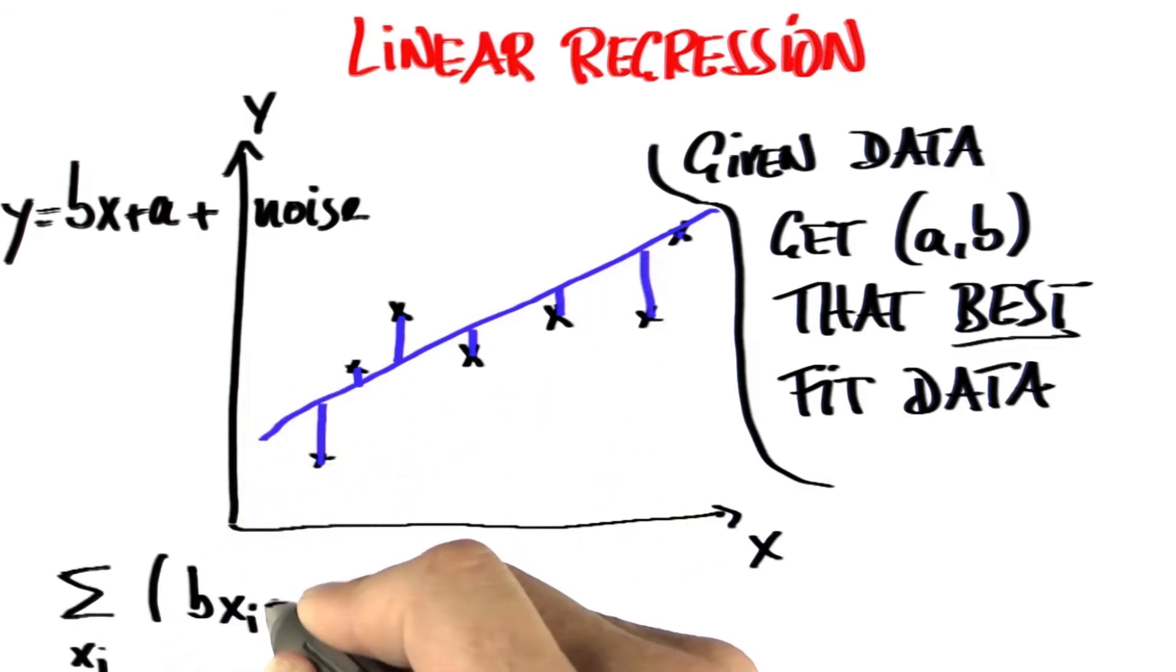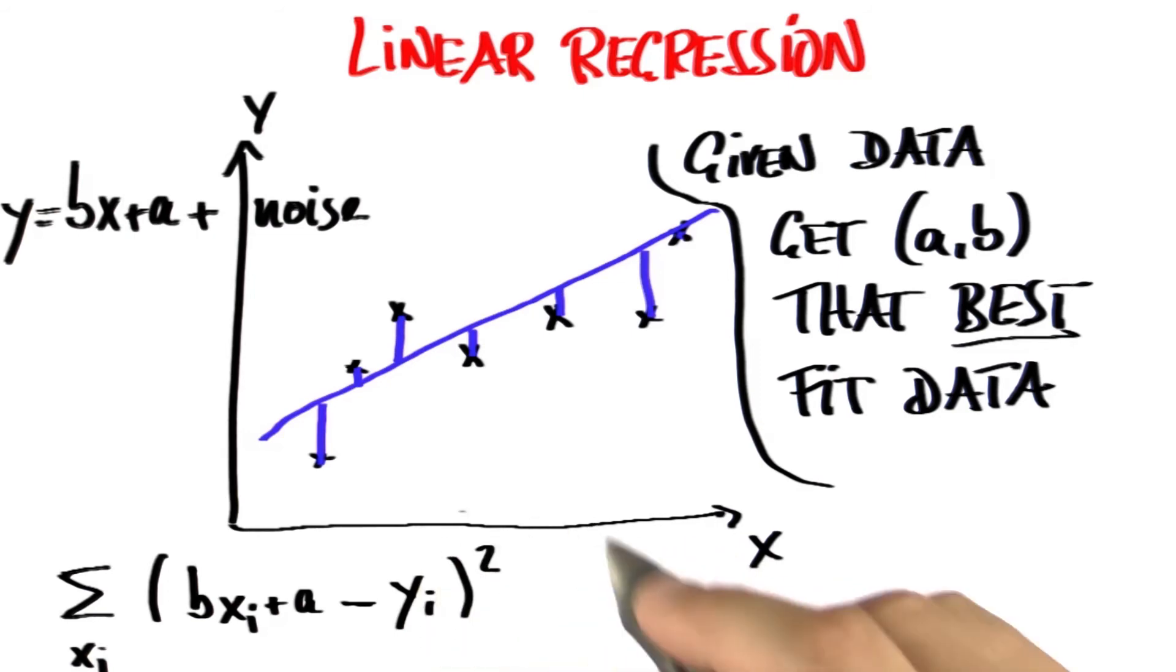But leaving this aside, what we're doing is we are adding over all data points the difference between our function and the y value of the data point with the square. And that distance is the distance we are minimizing.